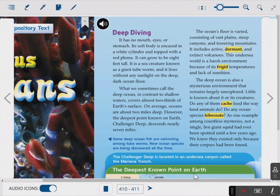It has no mouth, eyes, or stomach. Its soft body is encased in a white cylinder and topped with a red plume. It can grow to be 8 feet tall. It is a sea creature known as a giant tube worm, and it lives without any sunlight on the deep, dark ocean floor.